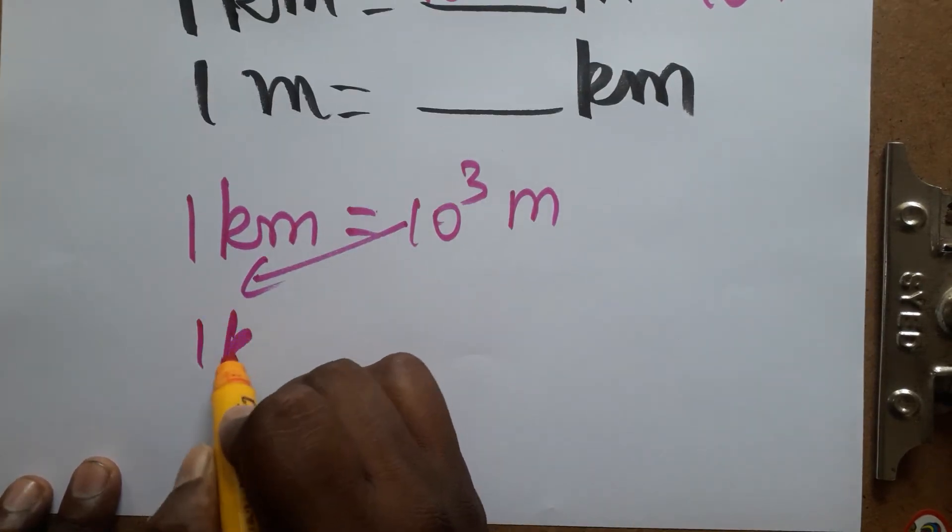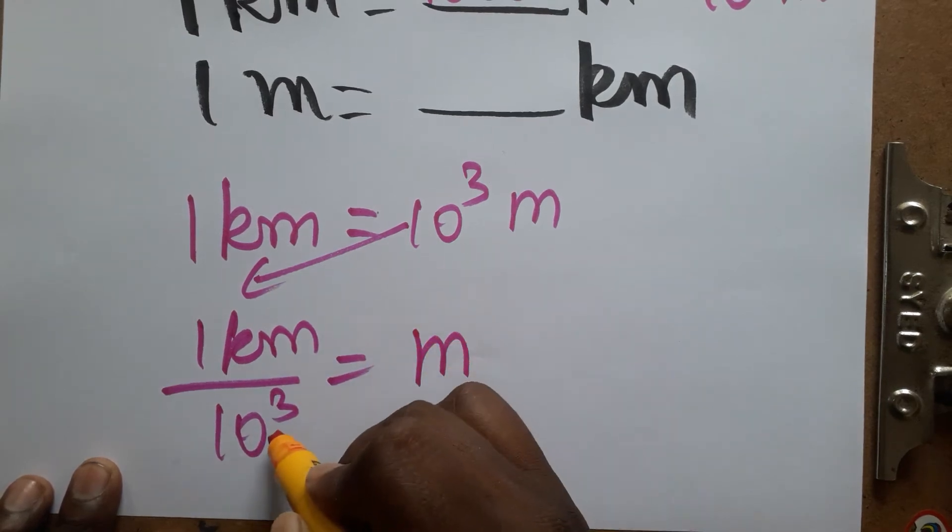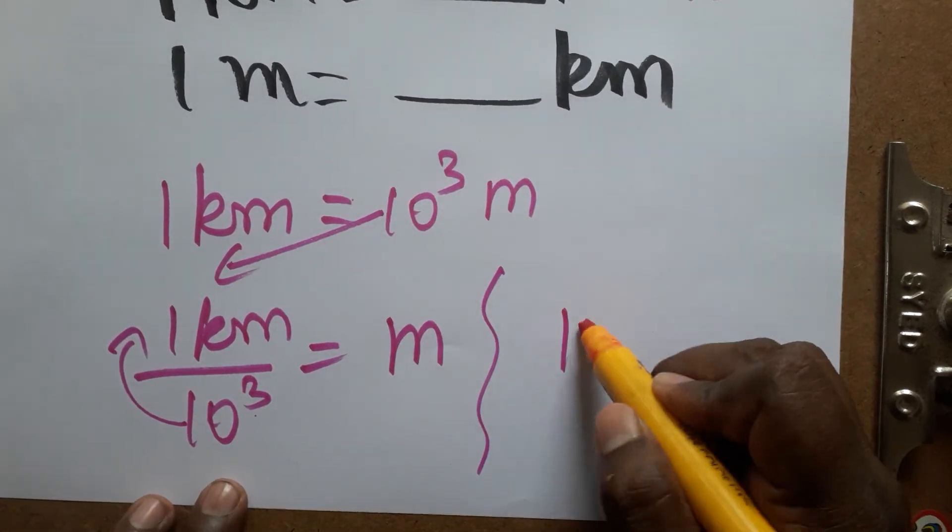Okay, so one kilometer divided by 10 power 3 is equal to meter. From denominator, if you are taking it as a numerator, you have to change it to 10 power minus 3.